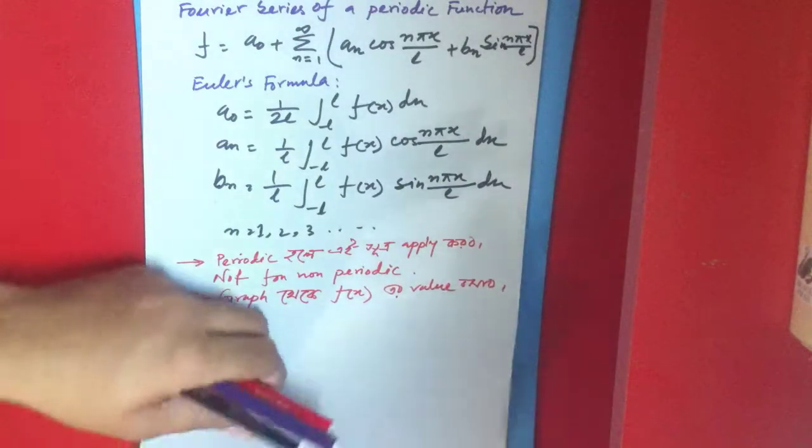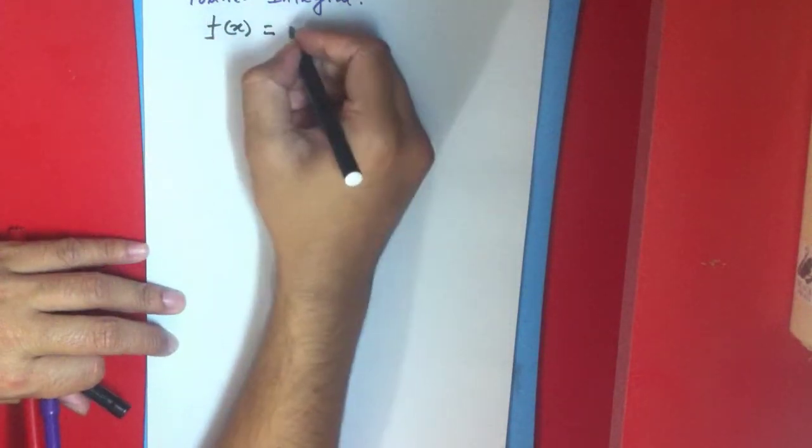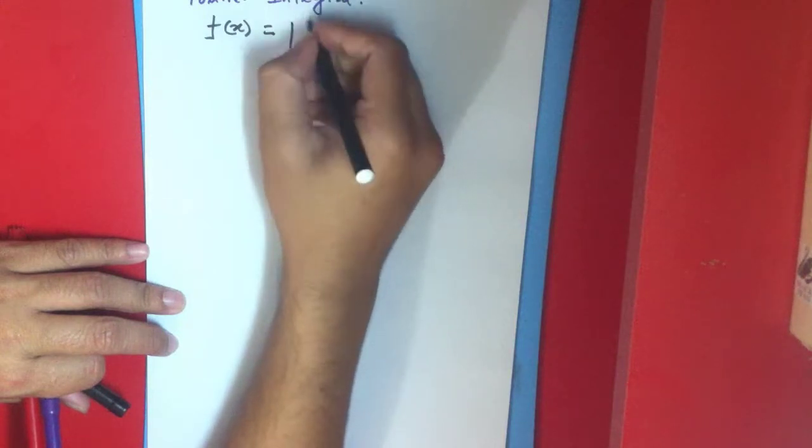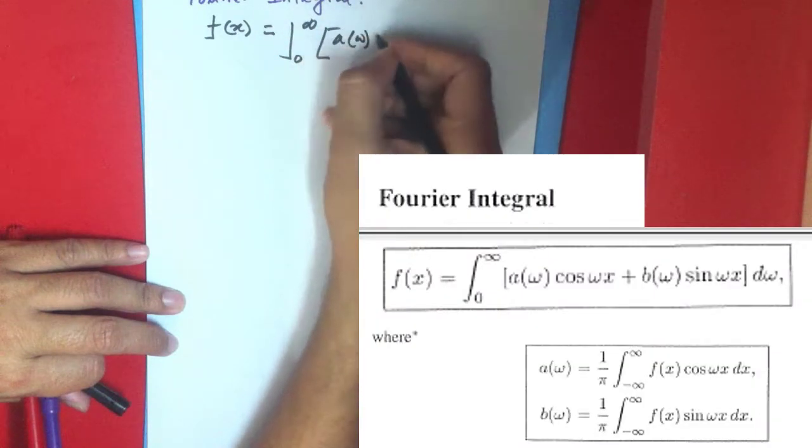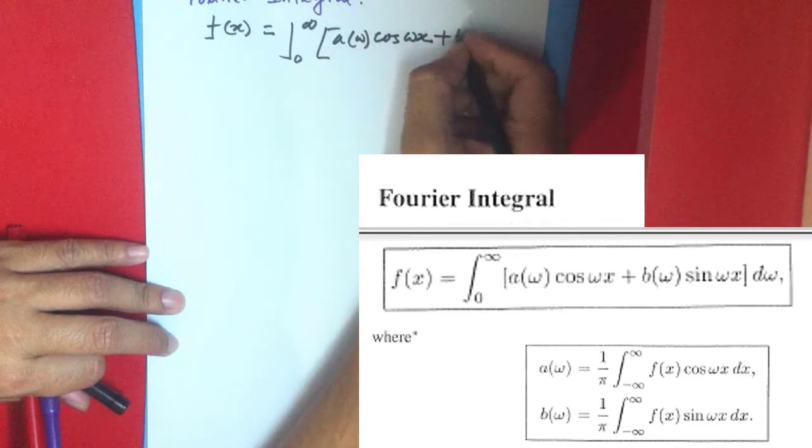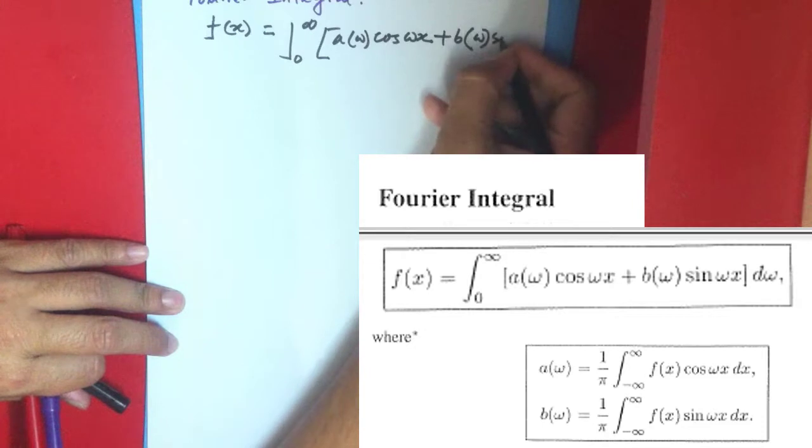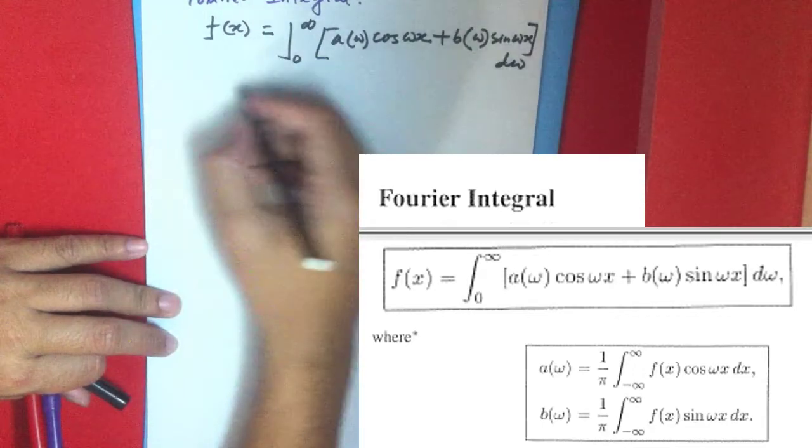For Fourier integral, the formula is: f(x) equals the integral from 0 to infinity of [a(ω) cos(ωx) plus b(ω) sin(ωx)] dω.